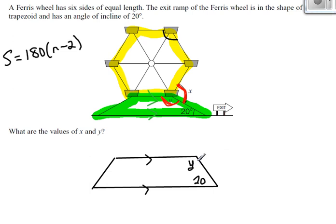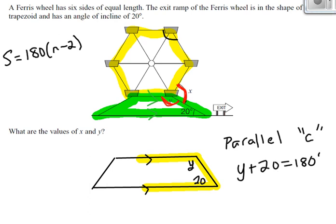What are we going to do to find Y? If you have parallel lines, think about the parallel line patterns. I know this is parallel to this, so I can say this is a C pattern. Because of parallel lines, C pattern, I can tell you that Y plus 20 equals 180 degrees. If you have parallel lines and you can find the C pattern, then you have angles that add to 180. That tells us Y is 160 degrees.